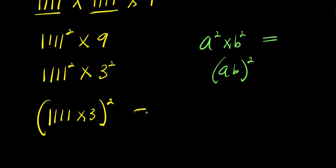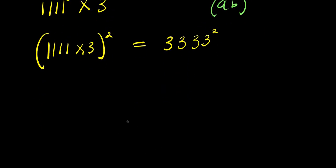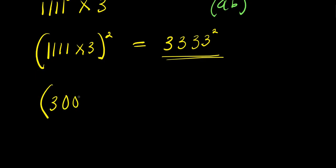That means 3333 squared. I can express 3333 as 3000 plus 333, so this becomes (3000 + 333)².